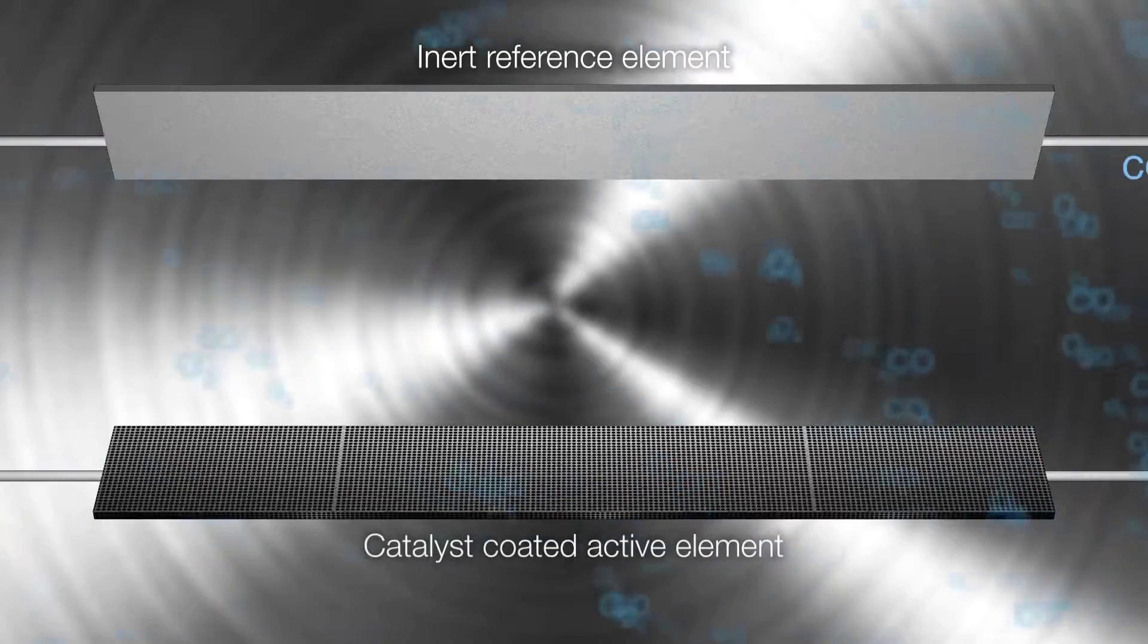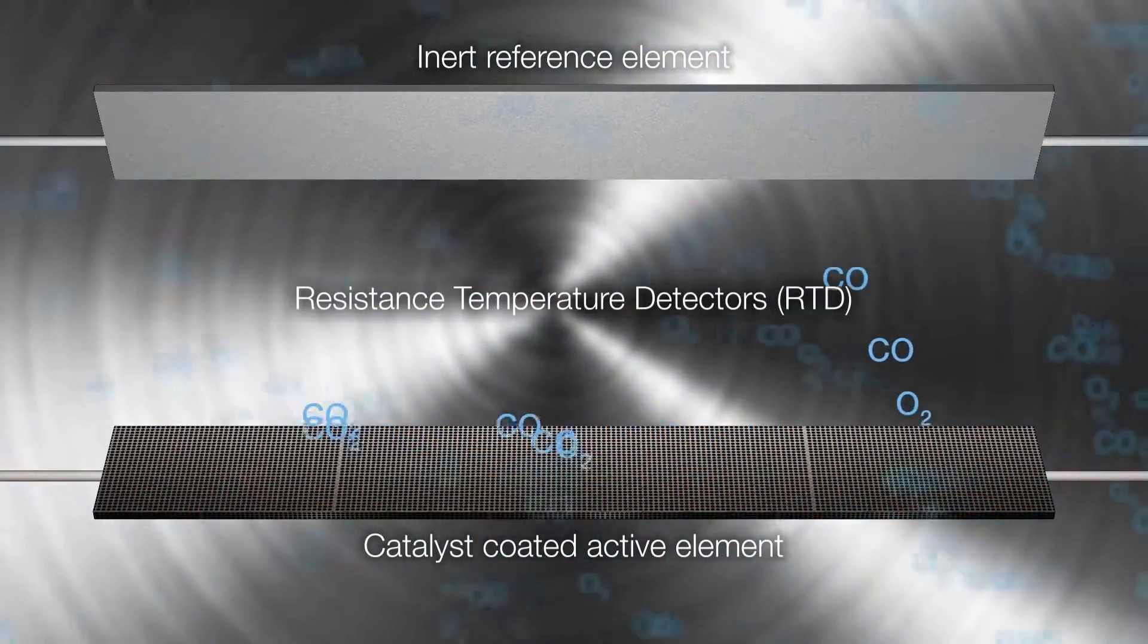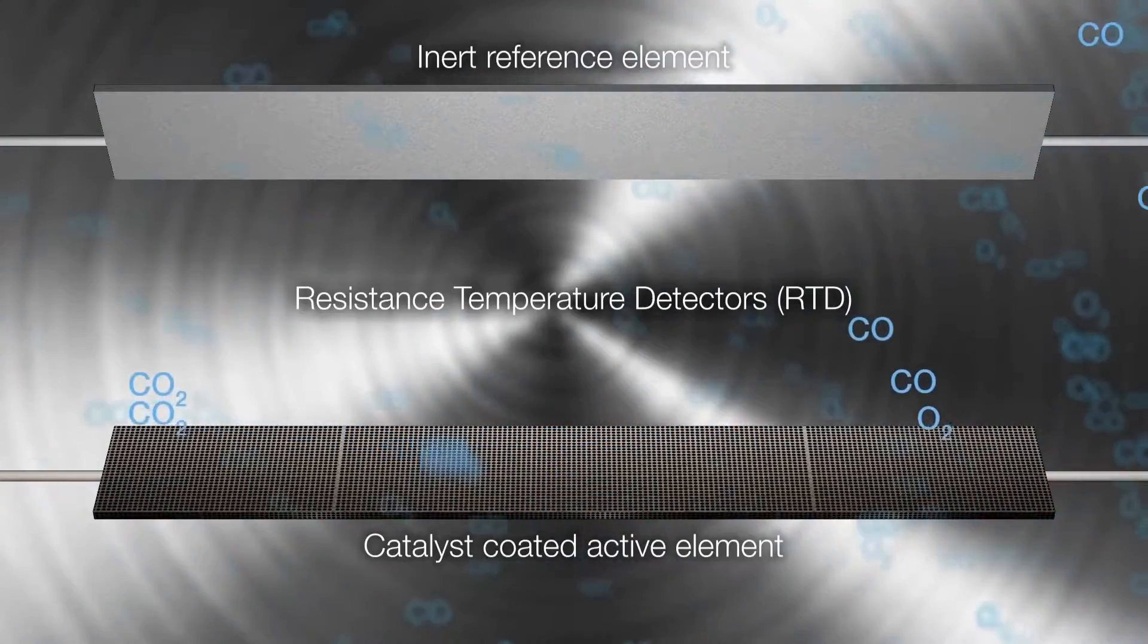The COE sensor consists of an inert coated reference element and a catalyst coated active element. Both elements are resistance temperature detectors, or RTD.